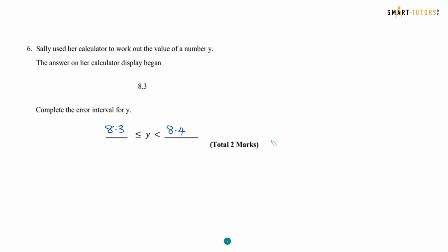Question number 6: Sally uses a calculator to work out the value of the number Y. The answer on the calculator display begins with 8.3. Complete the error interval for Y. The error interval means for 8.3 — the smallest number has to be 8.30000... something. So the lower bound is 8.3 exactly.